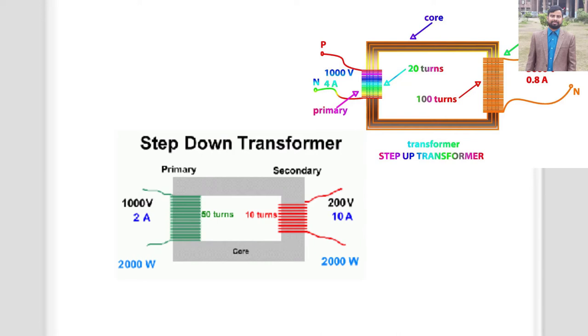Considering both step-down and step-up transformers, you can see it's a general rule that the coil with the most turns has the highest voltage, while the coil with the fewest turns has the highest current.